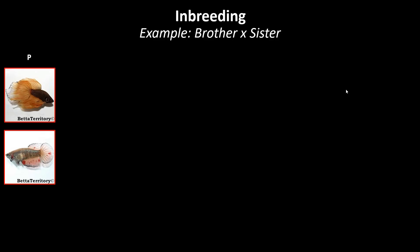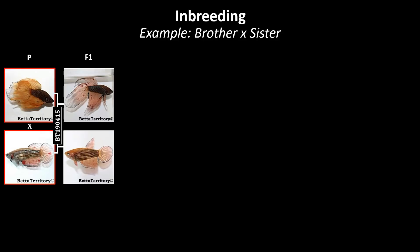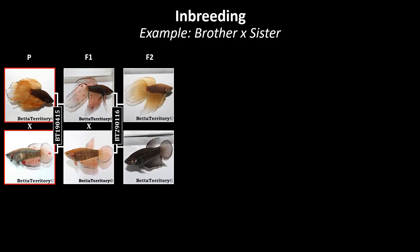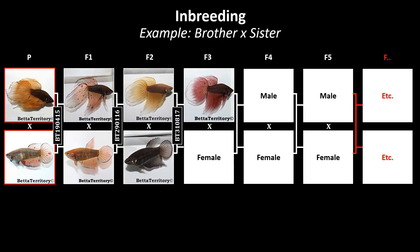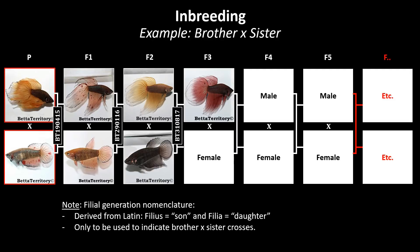Here you can see an example of inbreeding from my fish room where I cross two unrelated veiltail. Their offspring is called the first filial generation or F1. Intercrossing brother to sister from the F1 will lead to the second filial generation F2. Crossing brother to sister from the F2 will lead to the third filial generation F3 and further. Please note that the filial generation nomenclature can only be used in case of brother to sister crossings, as it is derived from the Latin words referring to son and daughter.